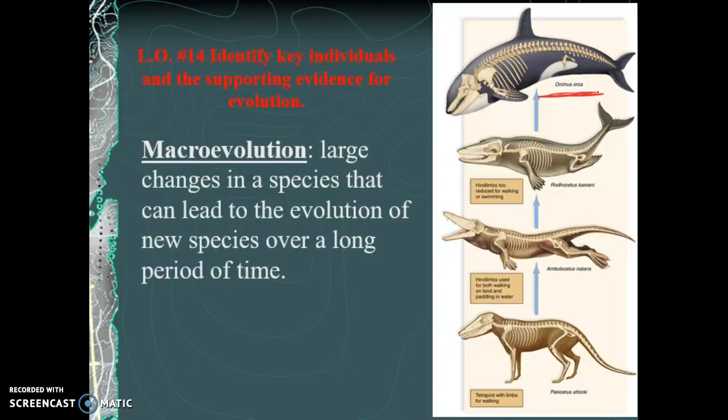Cuvier would have said orcas have always been orcas — they've never changed. But the evidence for evolution says these animals have an ancestor that used to live on land; it was a land-based mammal that evolved into the aquatic mammals we see today. A piece of anatomical evidence that supports this: these little hip bones. Why have hip bones if you've never had an ancestor that walked on land? Why have the DNA for that? It seems like poor design if that orca was always in the water and never changed. That would be a vestigial structure left over from a previous ancestor.